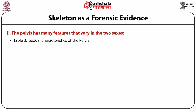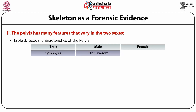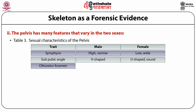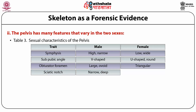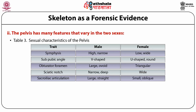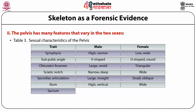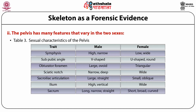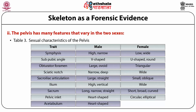The pelvis also has many features that vary between the sexes. The symphysis of the pelvis is high and narrow in male, but low and wide in female. The subpubic angle is V-shaped in males and U-shaped and round in females. The obturator foramen is large and ovoid in males but triangular in females. The sciatic notch is narrow and deep in males but wide and 70–90 degrees in females. The sacroiliac articulation is large and straight in males, small and oblique in females.